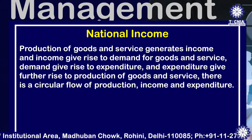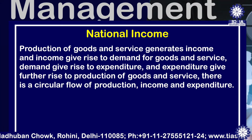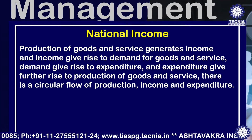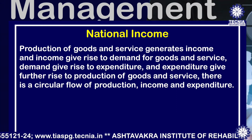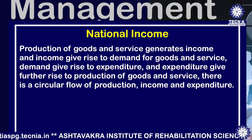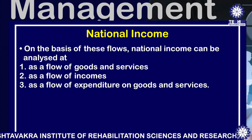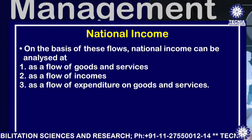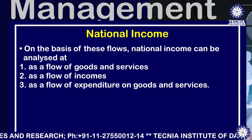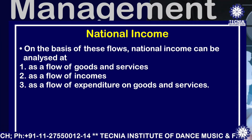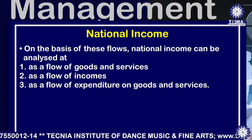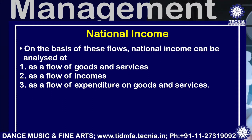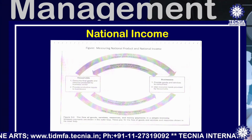The concepts and measurement of national income are based on a circular flow. Production of goods and services generates income, and income gives rise to demand for goods and services. Demand gives rise to expenditure, and expenditure further gives rise to production of goods and services. This cycle — known as the circular flow of production, income and expenditure — means national income can be analyzed as a flow of goods and services, a flow of incomes, and a flow of expenditure on goods and services.